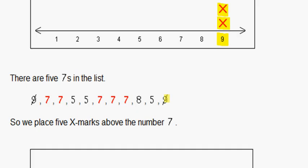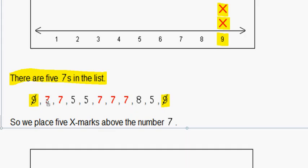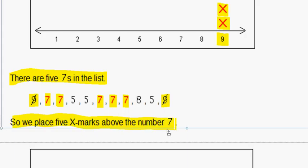We cross out the 9's in our numbers that we used. Then we look to the next group of numbers. There are five 7's in the list, so we place five X marks above the number 7 in our line plot.